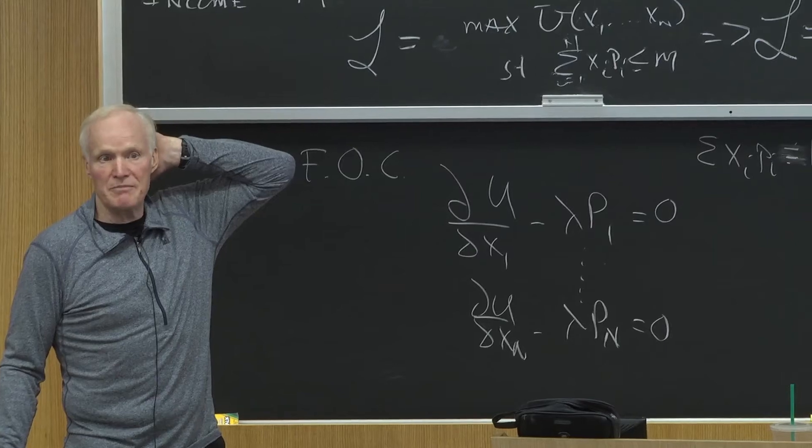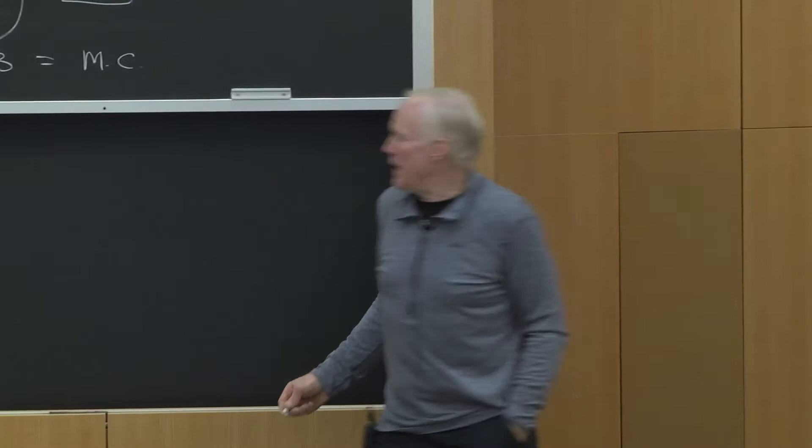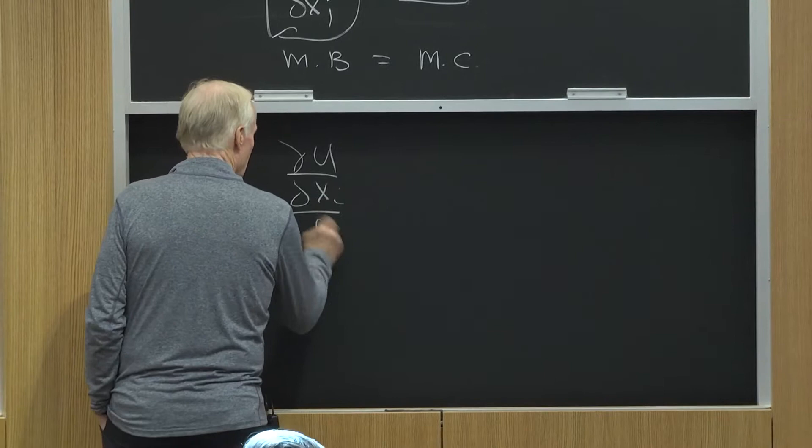Any questions that people have? Now there's a bunch of other ways I can think about this. I can think about it as partial u partial xi divided by pi equals partial u partial xj divided by pj.